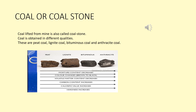Peat and lignite are low-grade coals. Some ash remains after the burning of coal, containing silicon dioxide (SiO₂) and basic substances like aluminium oxide (Al₂O₃), magnesium oxide, and iron oxide (Fe₂O₃). The amount of ash is 25–30% in low-grade coal like peat and lignite, and only 5% in high-grade coal.